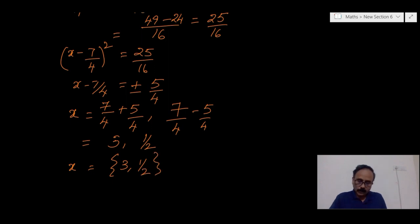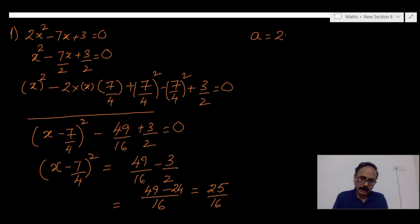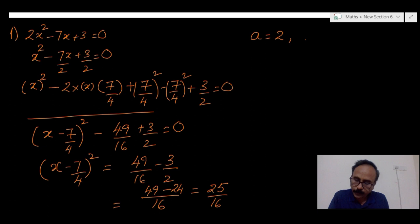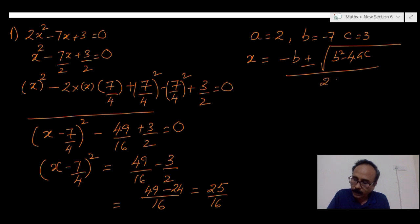Now let us do the same problem using the formula method. In the formula method, you must note down the values of a, b, c by comparing the given equation as ax² plus bx plus c equals 0. When we compare, a is equal to 2, b is equal to minus 7, c is equal to 3. We know the formula x equals minus b plus or minus square root of b² minus 4ac, whole divided by 2a.